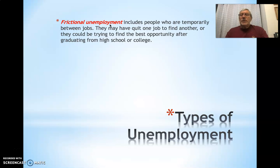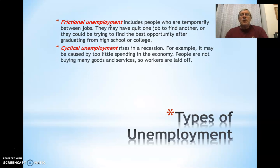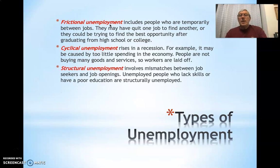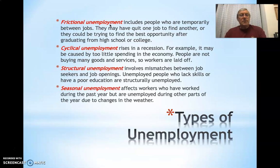When we take a look at unemployment, we have to break it down because there are different categories. There is frictional unemployment — these are people temporarily between jobs who want to work but are switching from one job to another, or may be graduating and entering the labor market. Cyclical unemployment rises in a recession; people are laid off based on the business cycle. Structural unemployment means there is a mismatch — you may be looking for a job but don't have the skills necessary for a particular group of jobs. Seasonal unemployment affects people who work summers at the beach or winters at ski resorts.